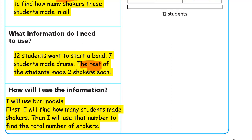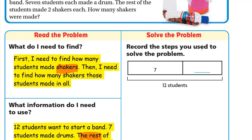I'll use bar models — first I'll find how many students made shakers, then use that number to find the total number of shakers. We have 12 students in all; 7 made drums and the rest made shakers. To find the rest: 12 − 7 = 5. So five students made shakers.